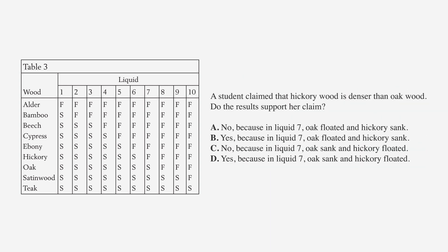Here are the question and answer choices. A student claimed that hickory wood is denser than oak wood. Do the results support her claim? Choice A is no because in liquid seven, oak floated and hickory sank. Choice B is yes because in liquid seven oak floated and hickory sank. Choice C is no because in liquid seven oak sank and hickory floated. And choice D is yes because in liquid seven oak sank and hickory floated.